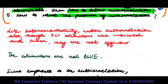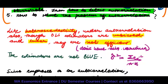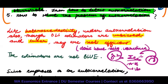Just like heteroscedasticity, autocorrelation also has estimators that are unbiased and linear, but they are not efficient — they do not have the minimum variance. The reason is that sigma-hat-squared equals the sum of EI-squared divided by N minus K, and because EIs are linked to each other, it affects EI-squared, and this sigma-hat-squared enters the variance of the betas.